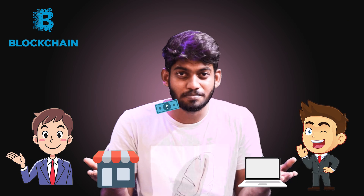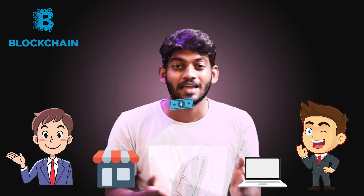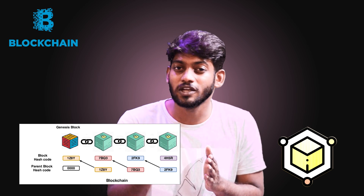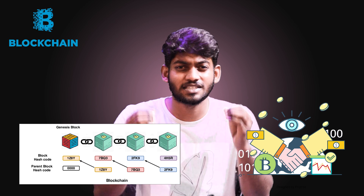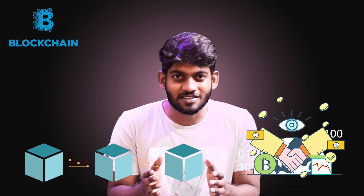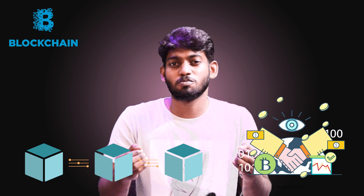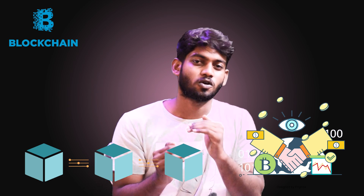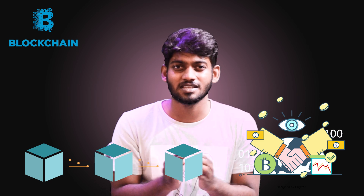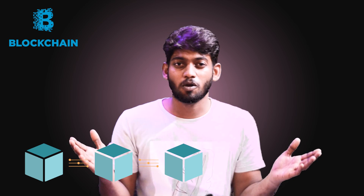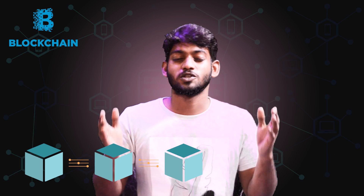When a person is sending money to person B, a transaction happens and that transaction is sent into a block. That block creates a unique code called a hash. Whenever a new transaction takes place, a new block is created which is interconnected with the previous block, and that previous block is interconnected with the block before it. So many blocks are created which are all interlinked, and they form a huge chain called a blockchain.